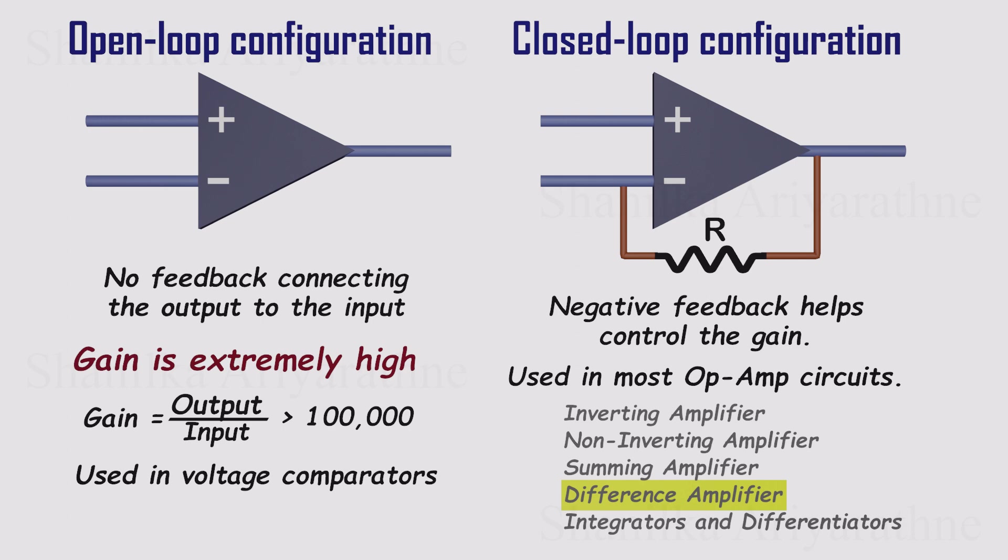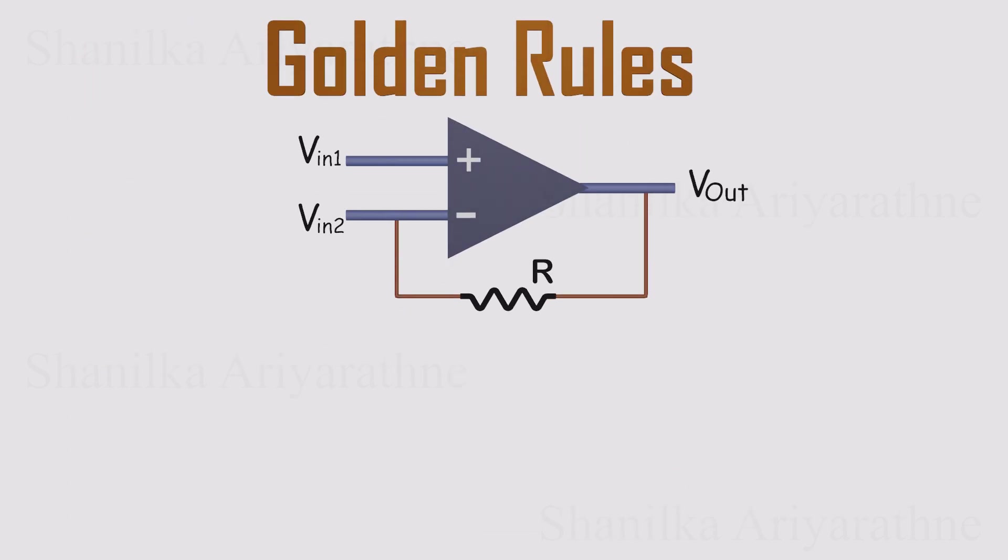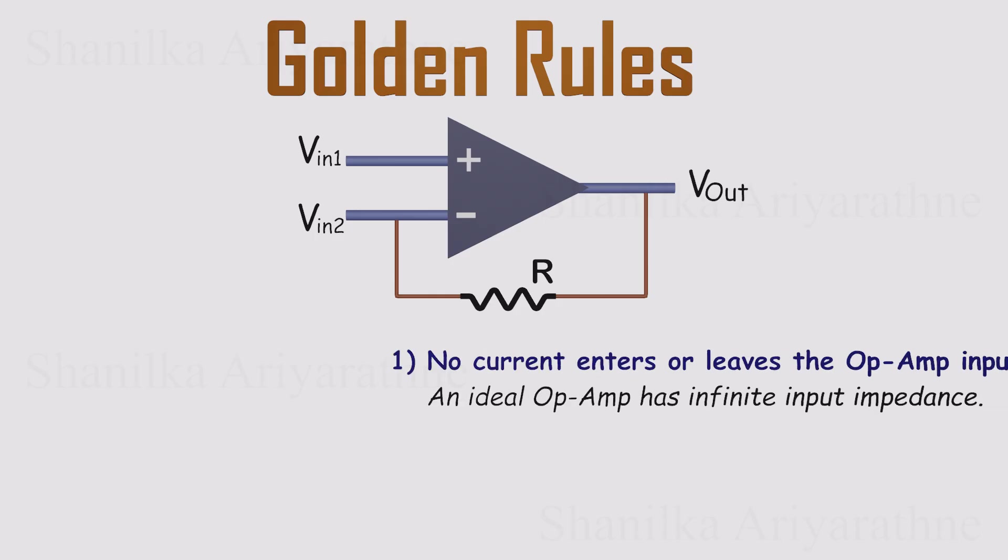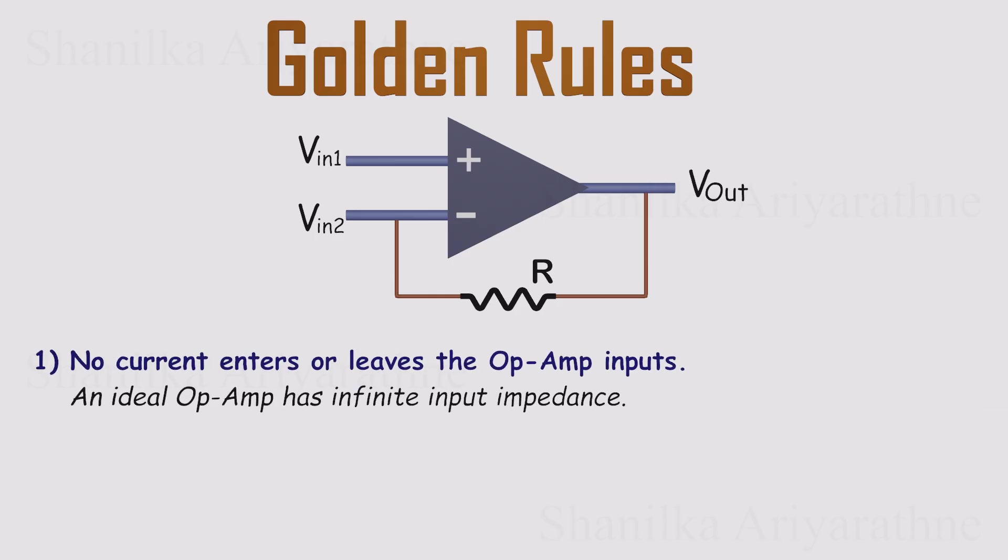Before we dive into applications, there are two golden rules for analyzing op amps with negative feedback. They come straight from the ideal op amp model, and they make circuit analysis so much easier. Rule one, no current flows into the input terminals. In other words, an ideal op amp has infinite input resistance.